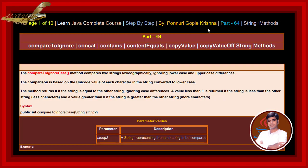In this session, let us learn about compareToIgnoreCase, concat, contains, contentEquals, copyValue, and copyValueOf substring methods. The compareToIgnoreCase method compares two strings lexicographically, ignoring lowercase and uppercase differences.